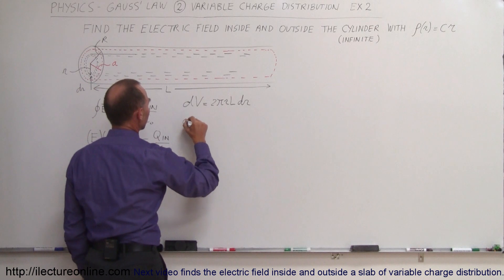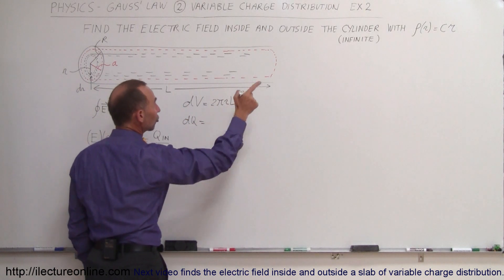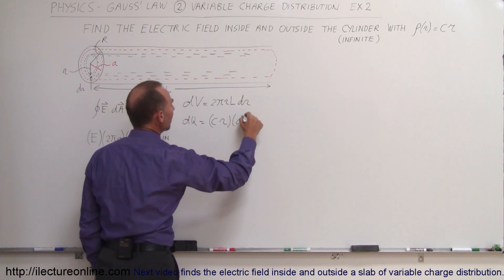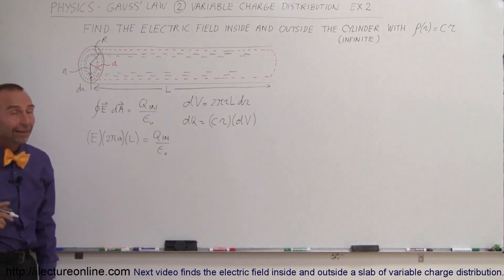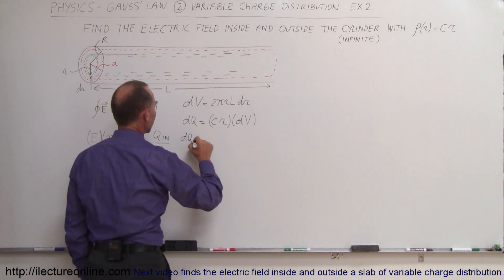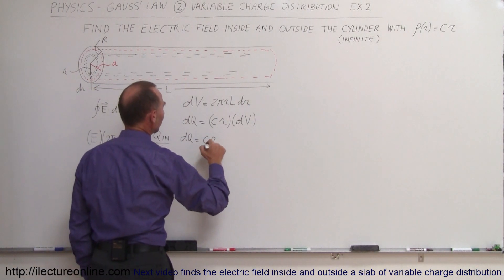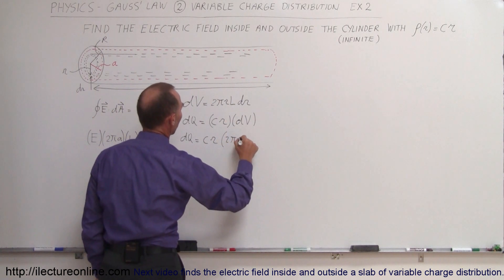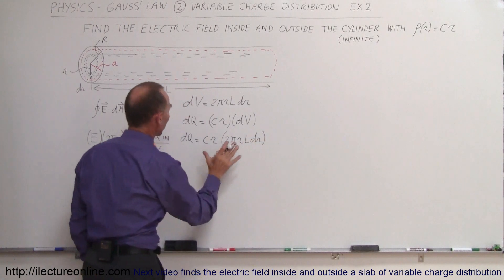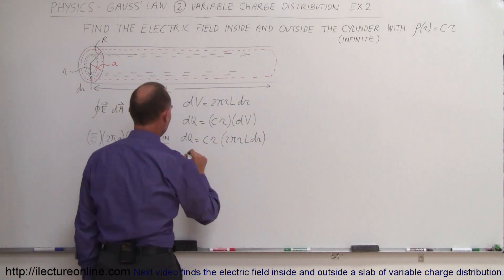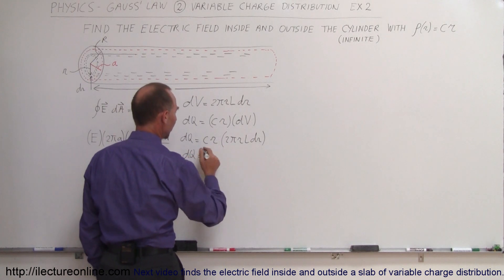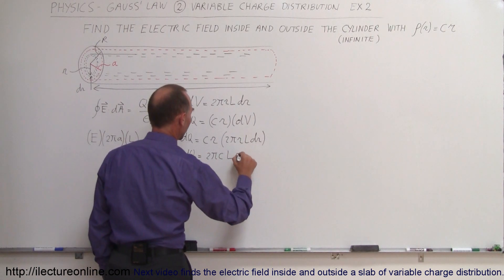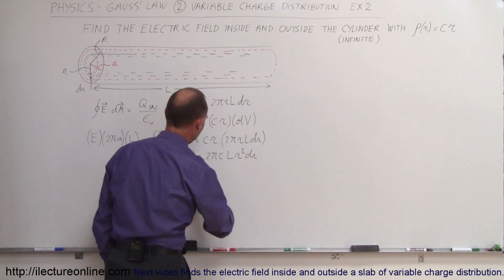The charge element dq can then be found by taking the charge density, which is C times r, times dV. Multiplying those together: dq equals C times r times dV, which is 2πrL dr. Simplifying, we write all constants first: dq equals 2πCL times r squared dr.